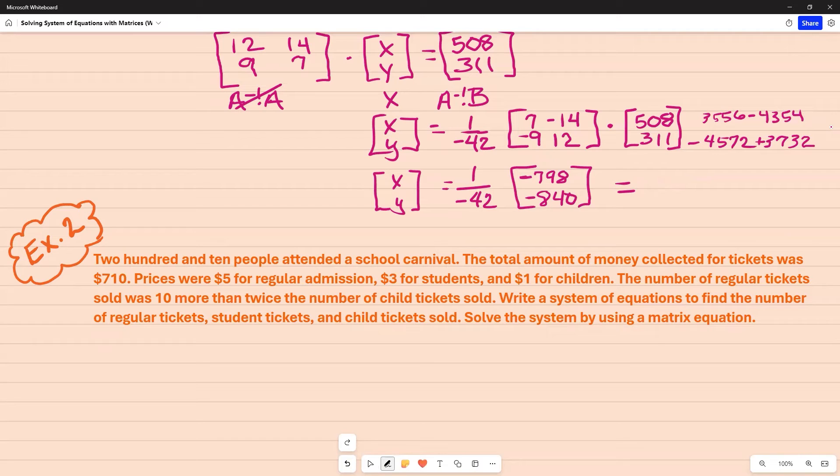So now I'm going to take negative 798 divided by negative 42, and that's going to leave me with 19, and I'm going to take negative 840 and divide it by that same negative 42, and that leaves me with 20. So my X is 19, and my Y is 20. You just have to set it up as matrices, or you may see it written in coordinate form.